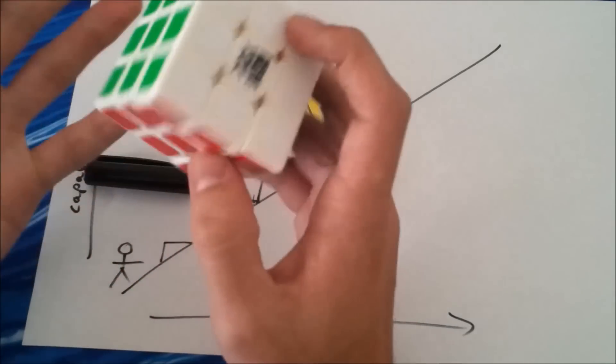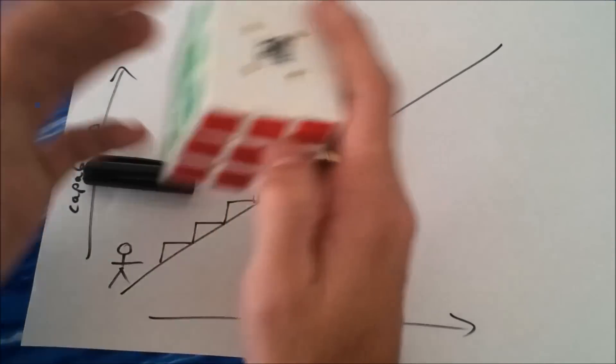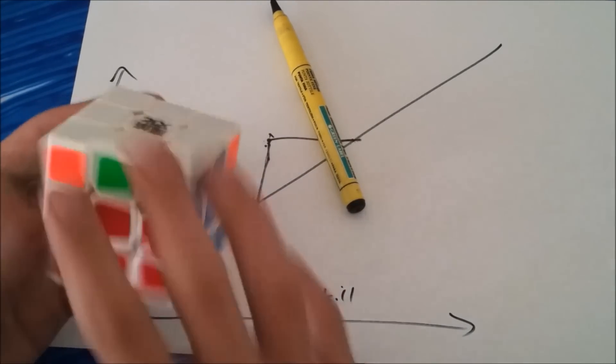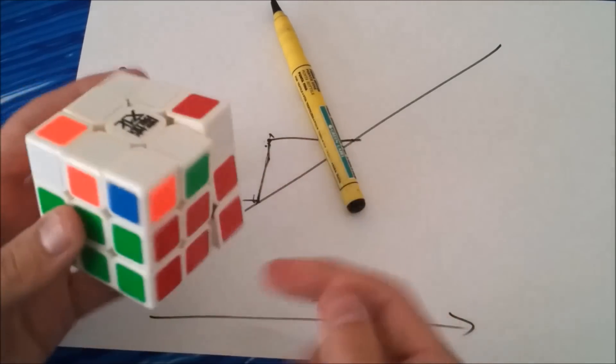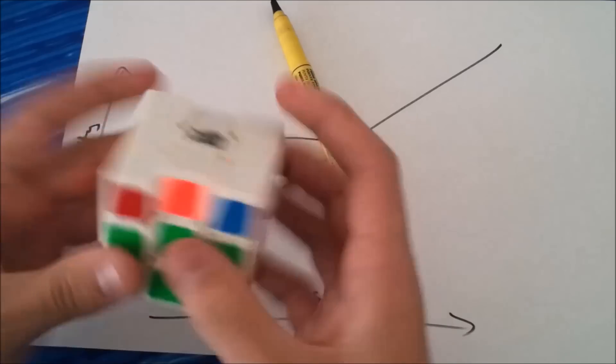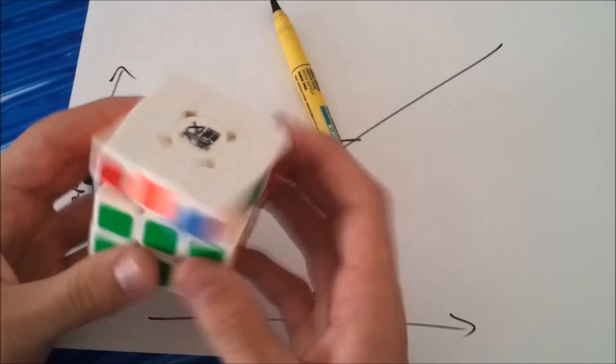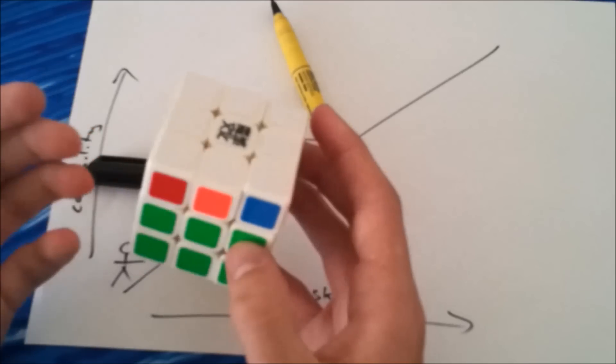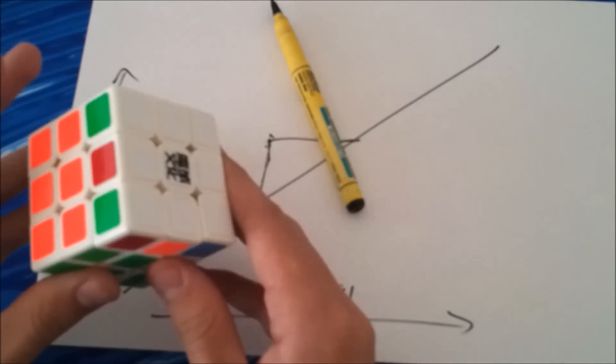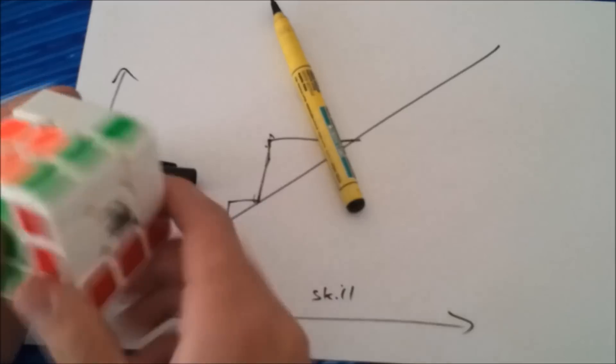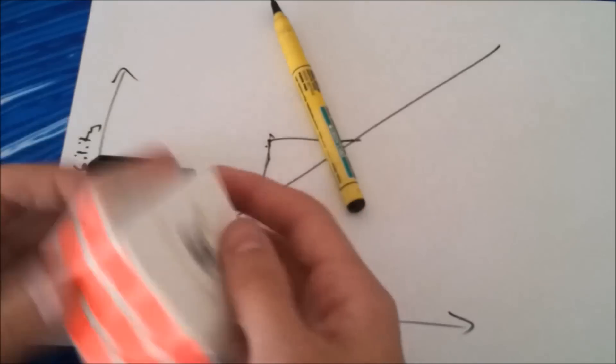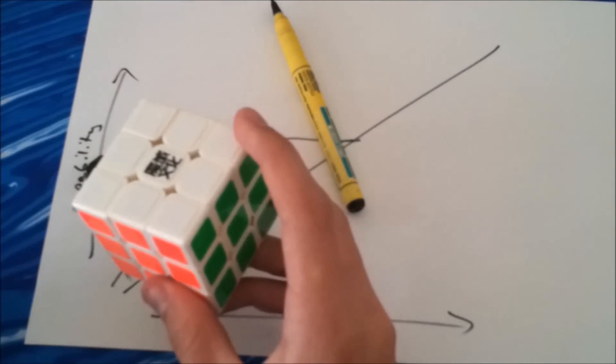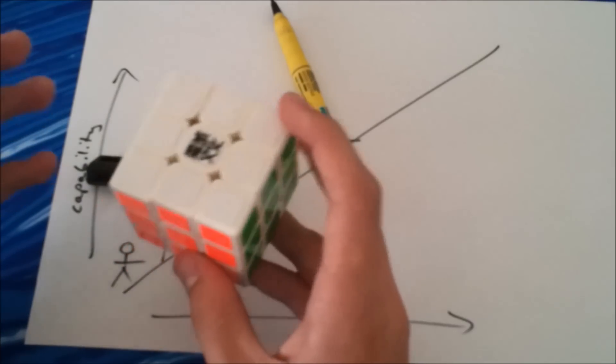And you'll find when you learn new algorithms or something, you'll notice that while you may be able to do, say, a G perm by itself, but when you're confronted with that case in a solve, right, you may be able to do it quickly by itself, but in a solve, if you learn a new algorithm, you'll find you'll have a bit of a pause, you'll obviously be a bit slower with execution, and you'll be interrupted. So obviously, in this sense, the purpose of practicing new things is to consolidate what you know, so it's all in muscle memory, so you don't have to think about how you're solving the puzzle.